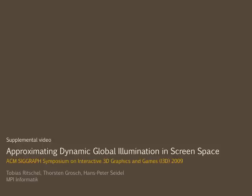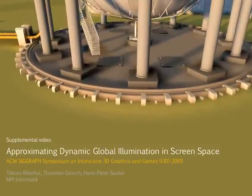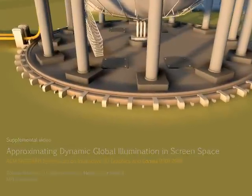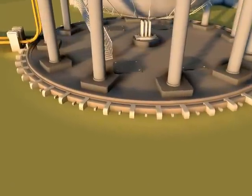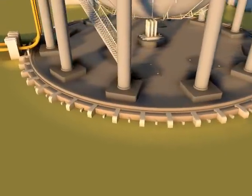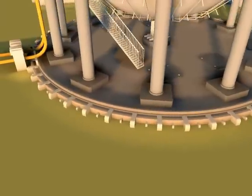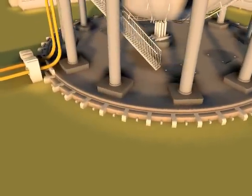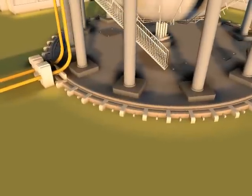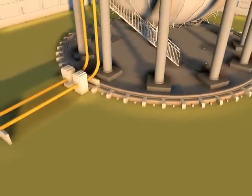Approximating dynamic global illumination in image space. Ambient occlusion computed in image space is a simple and effective method to improve real-time rendered images. It works best for shadows of meso structures — geometric details that are small yet too big to be represented by a texture or bump map.